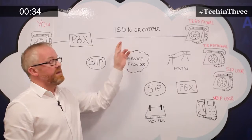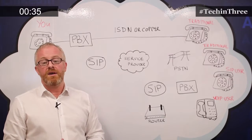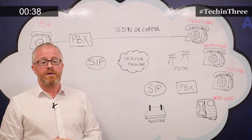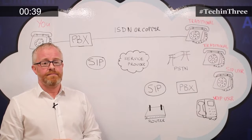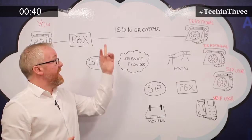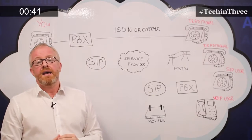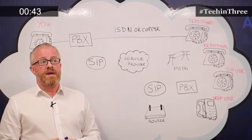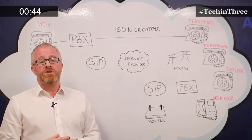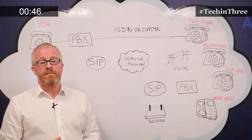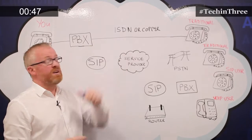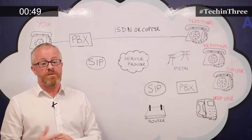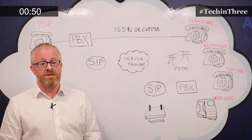The line used along the way is called an ISDN line or a copper analog line. The ISDN line allows you to carry multiple channels of calls at any one time — for instance, it could have a capacity of 30 calls, both internal and external.